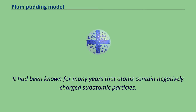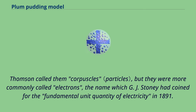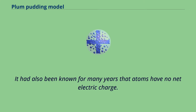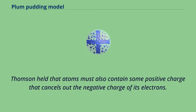It had been known for many years that atoms contain negatively charged subatomic particles. Thomson called them corpuscles, but they were more commonly called electrons — the name which G.J. Stoney had coined for the fundamental unit quantity of electricity in 1891. It had also been known for many years that atoms have no net electric charge, so Thomson held that atoms must also contain some positive charge that cancels out the negative charge of its electrons.